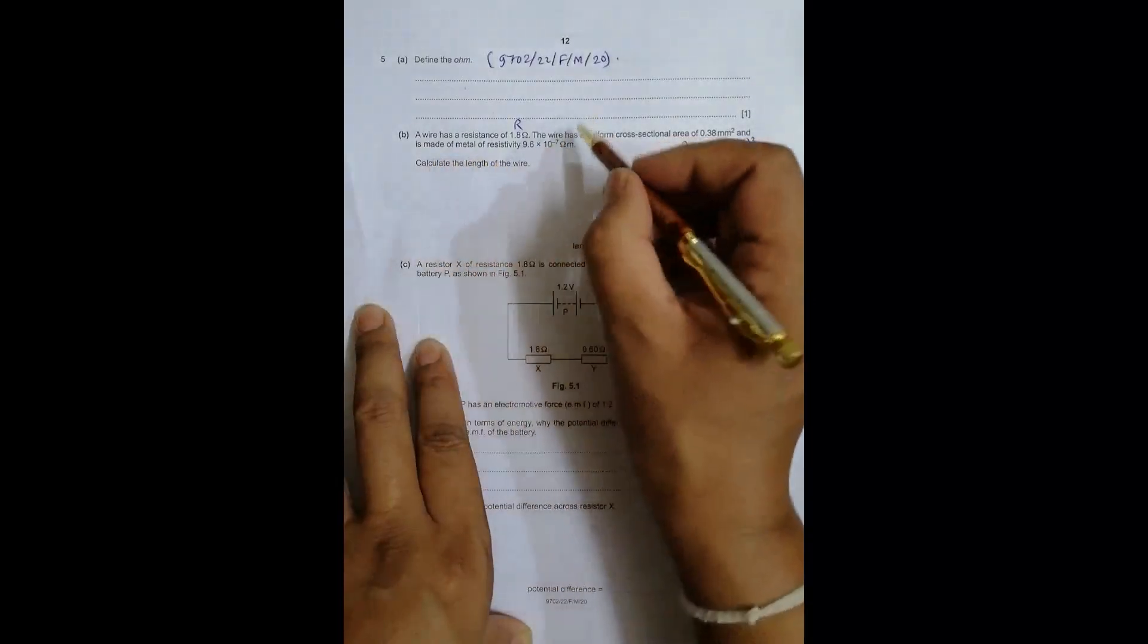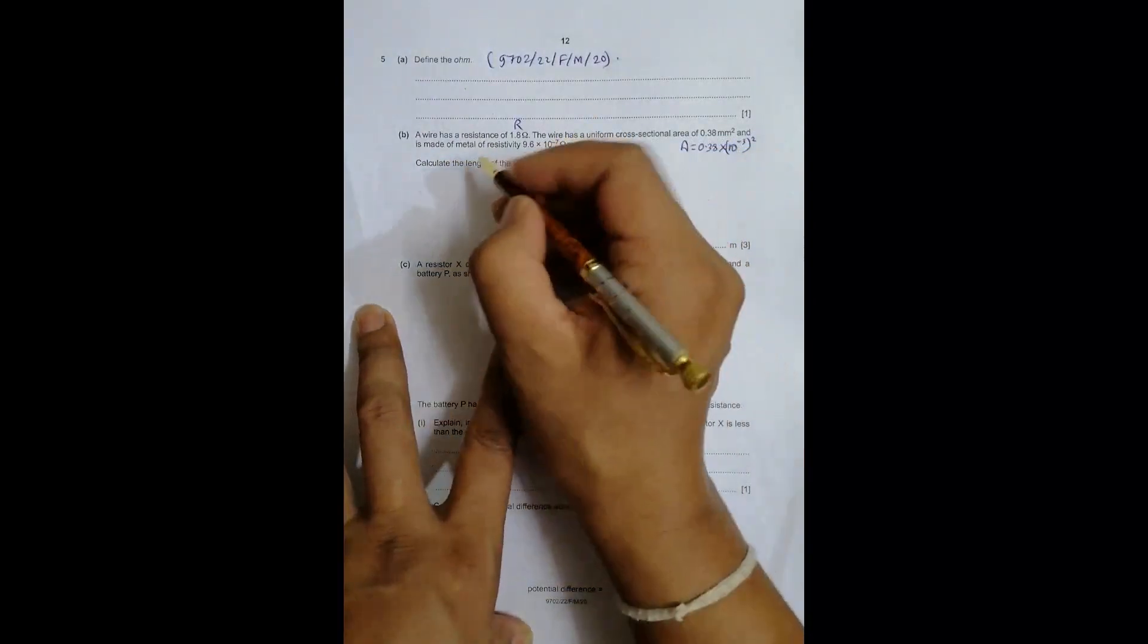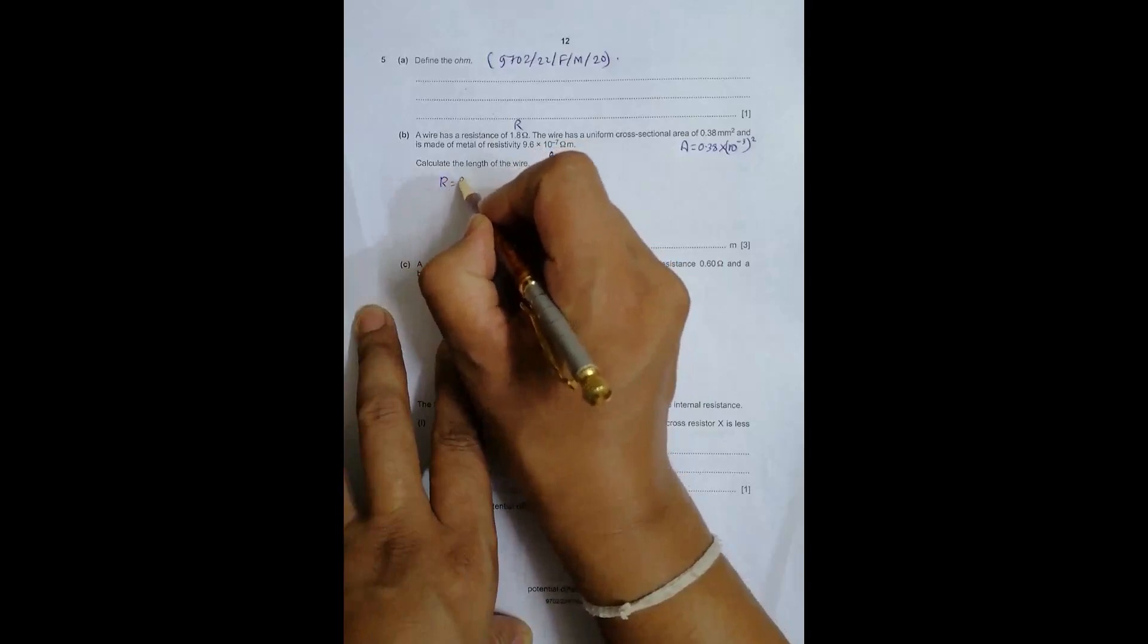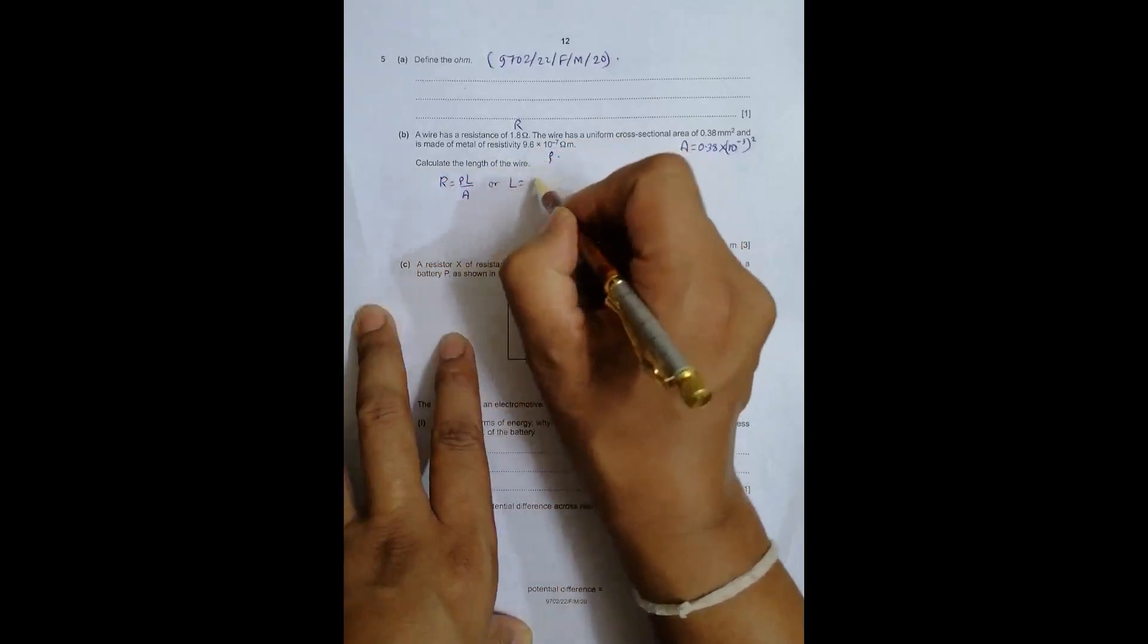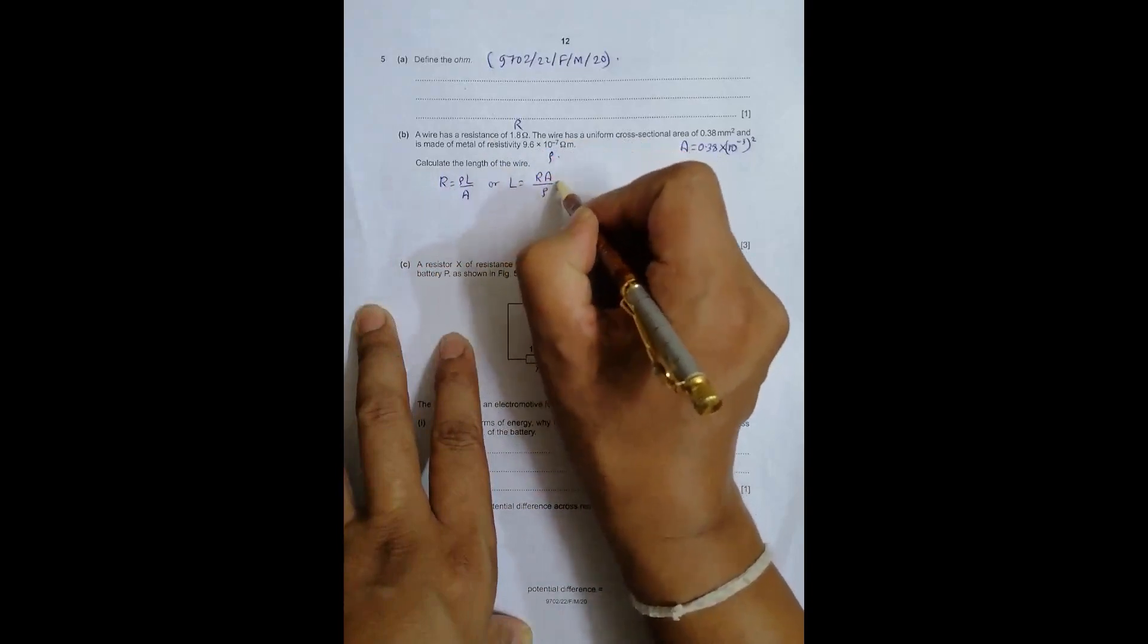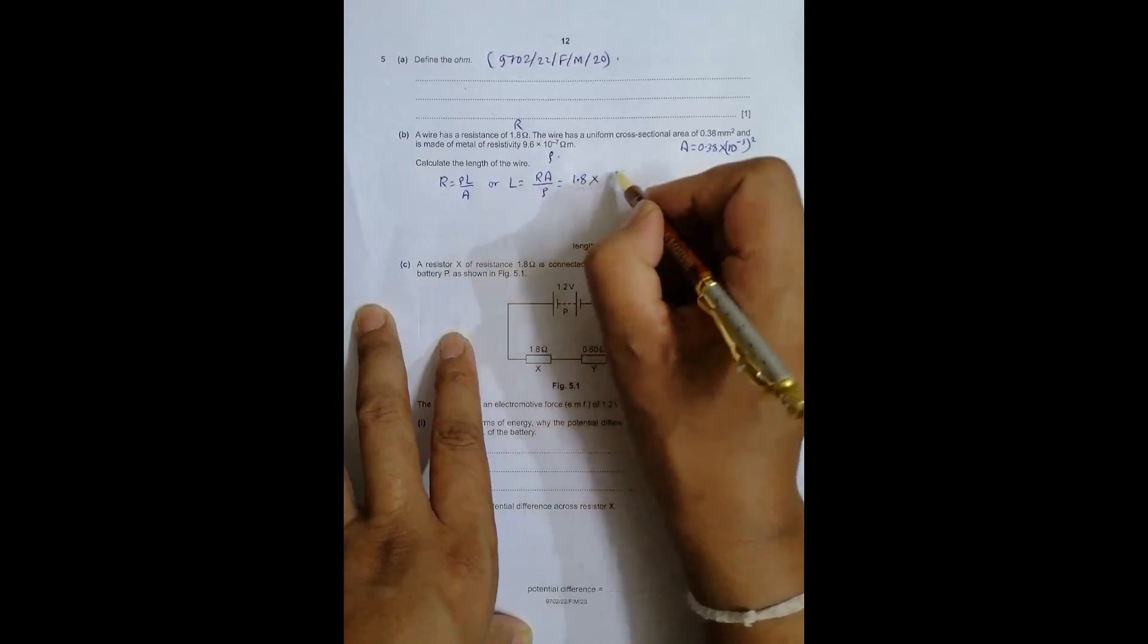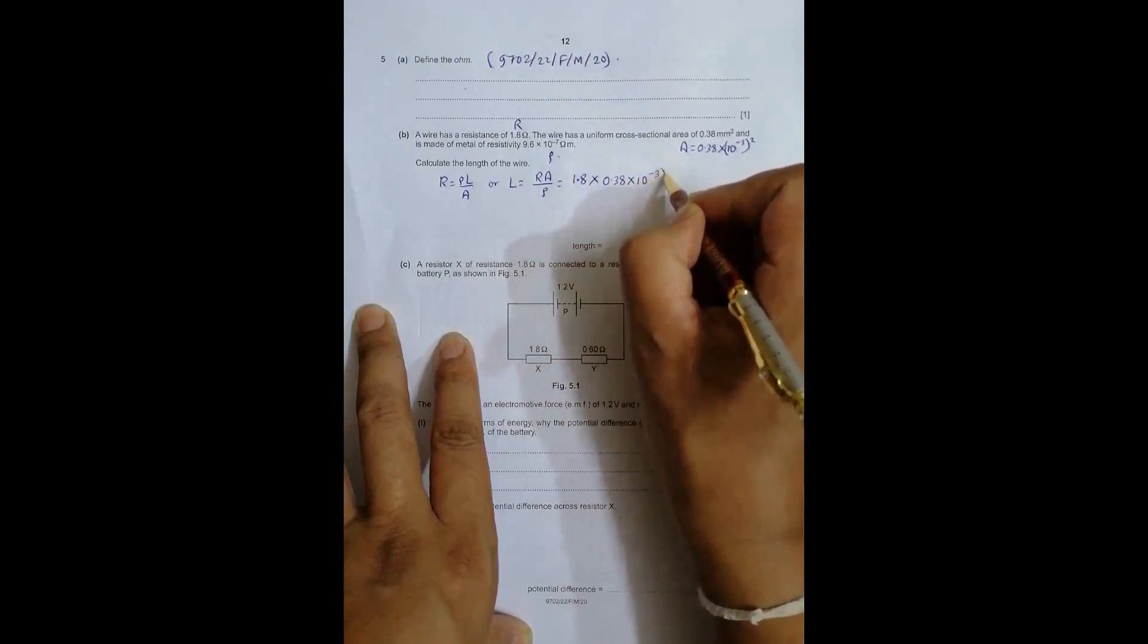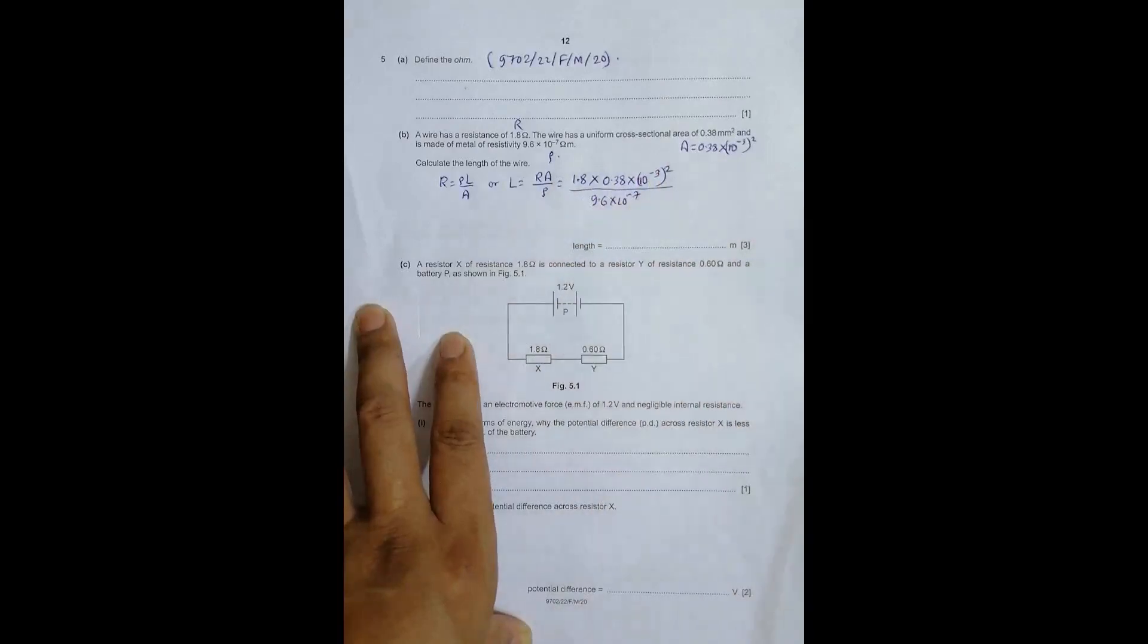We have R = ρL/A, which gives us L = RA/ρ. So L equals 1.8 × (0.38 × 10^-3)² divided by 9.6 × 10^-7 ohm meters.